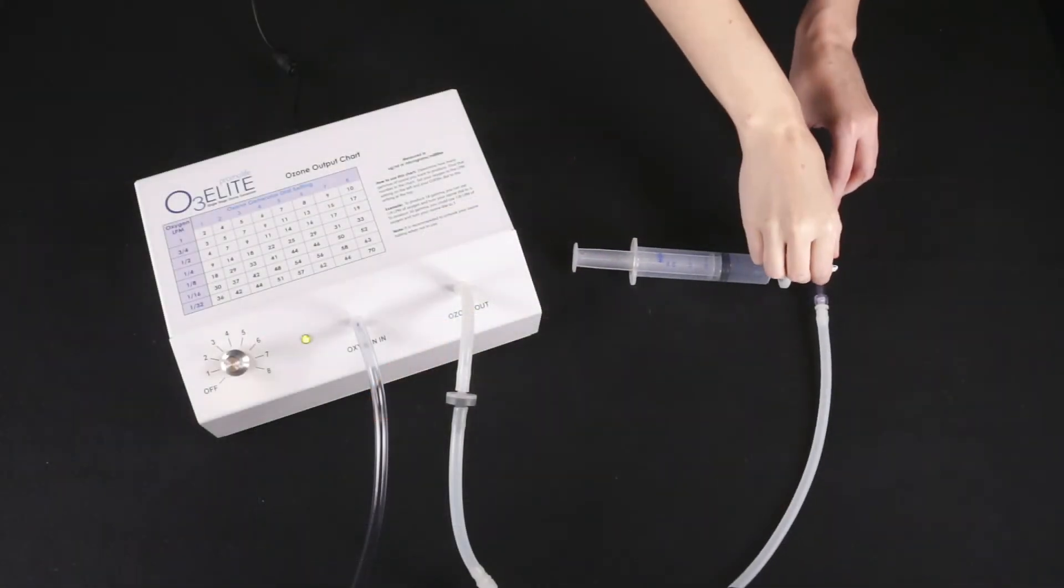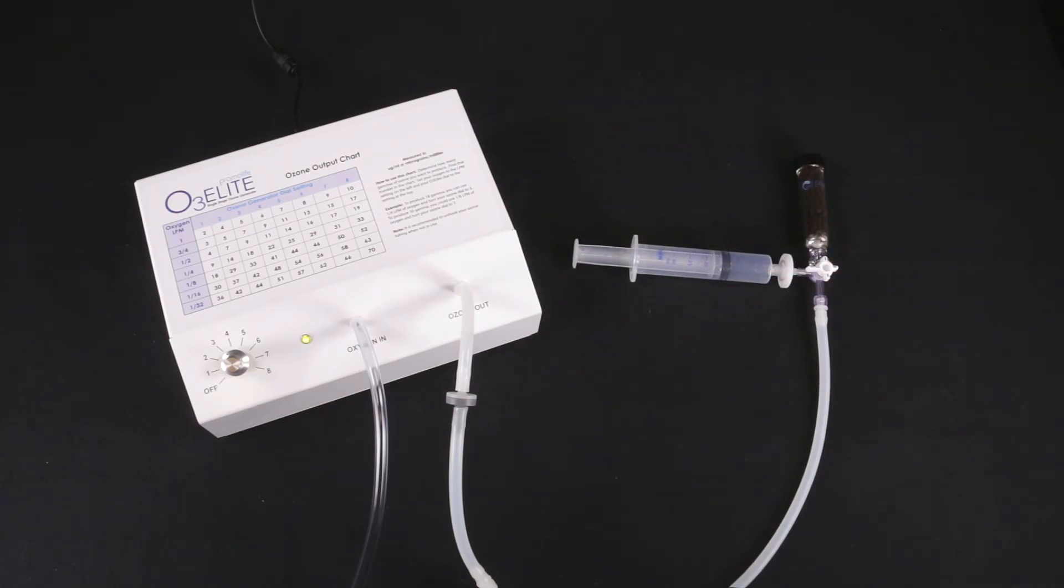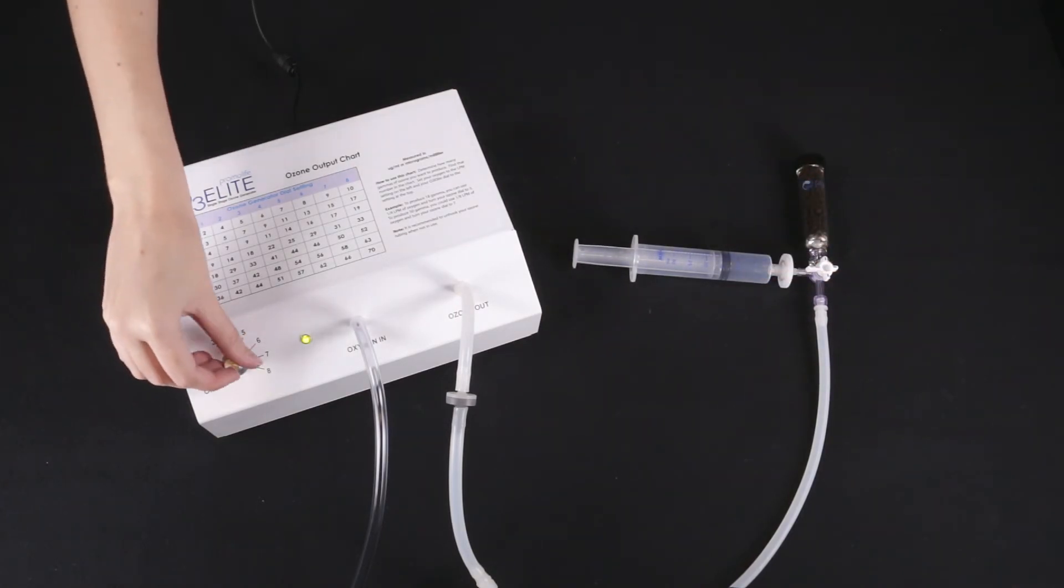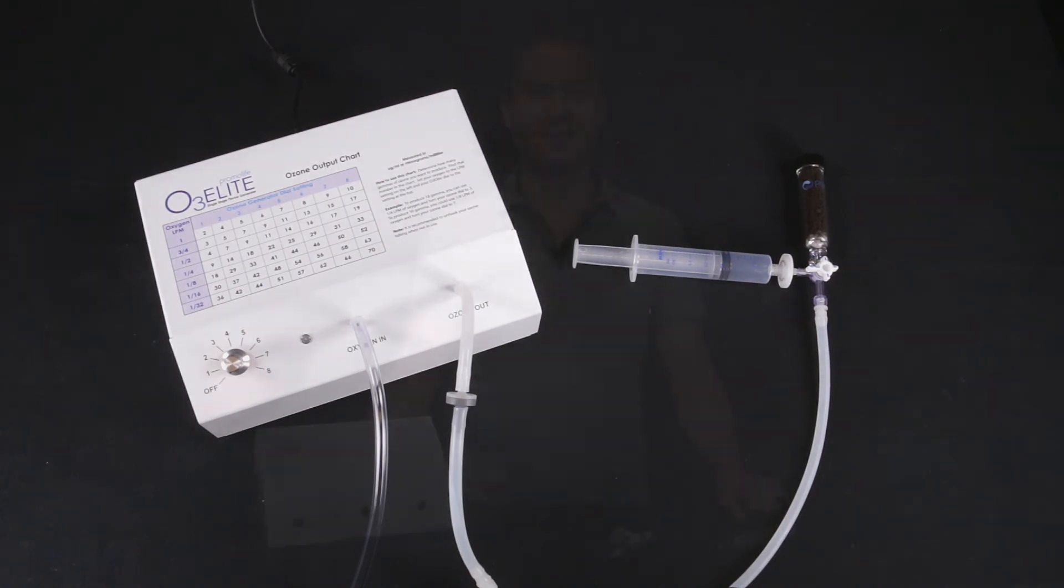Then when you are finished, turn the off-valve back toward the micron filter, turn off your ozone generator, and remove the syringe. You can then use the ozone-filled syringe.